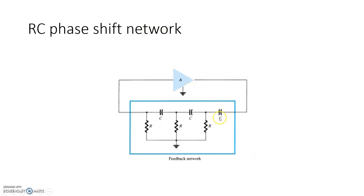This is the basic diagram of the RC phase shift network. This block may be made up of an op-amp, MOSFET, or BJT — whatever. This block provides 180 degree phase shift, so it is called an inverting amplifier. The output is fed back into the feedback network, from where the feedback voltage is again provided as input to the amplifier block.